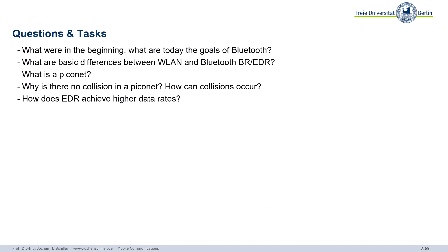That was the introduction to Bluetooth. In the beginning, what were the goals, and looking at Bluetooth today, there may be some enhanced goals. What are the differences between wireless LAN and Bluetooth on a high level? There's something special in Bluetooth: the Piconet. Notably, inside a Piconet there are no collisions — collisions could be caused by something external but not within the Piconet itself. And if you look at the higher data rates, the EDR mode: how does EDR achieve higher data rates?